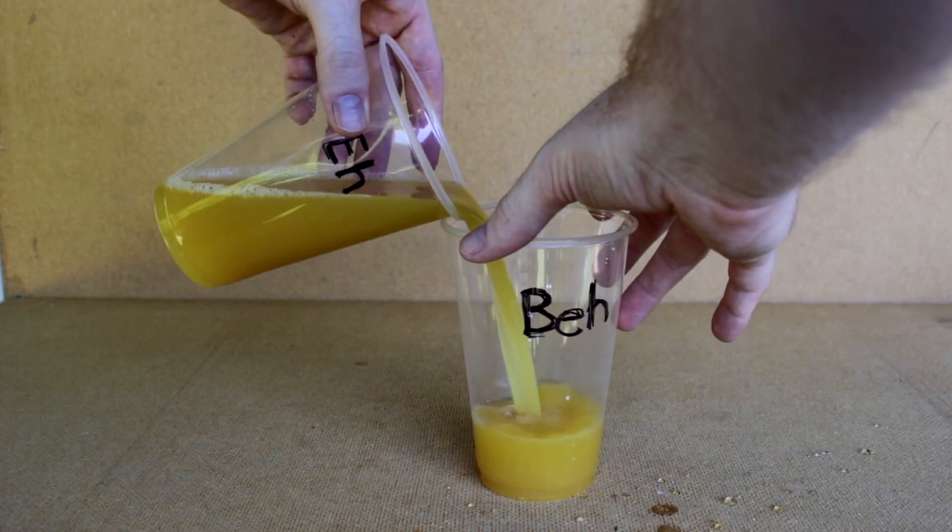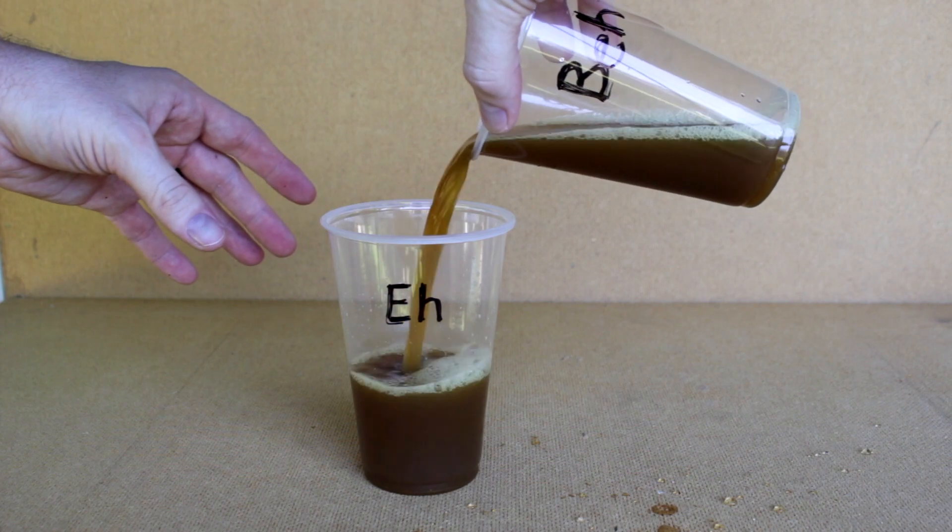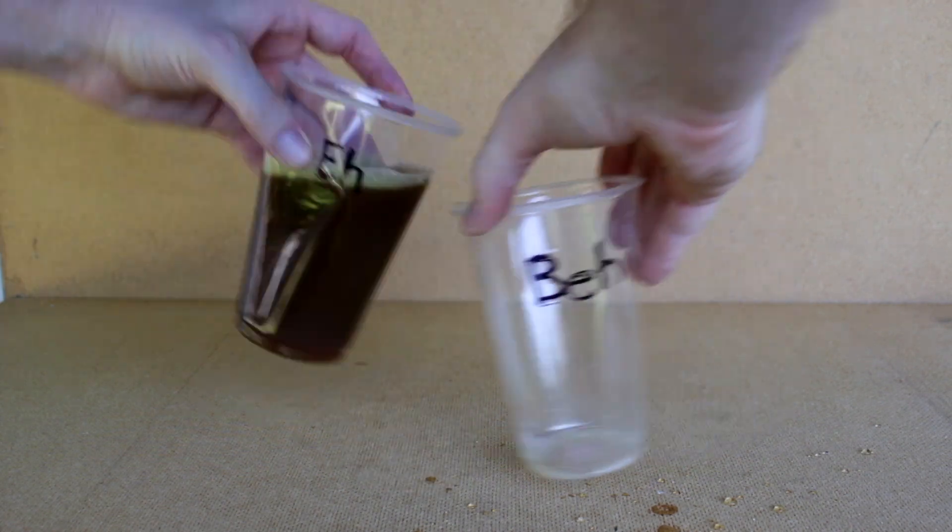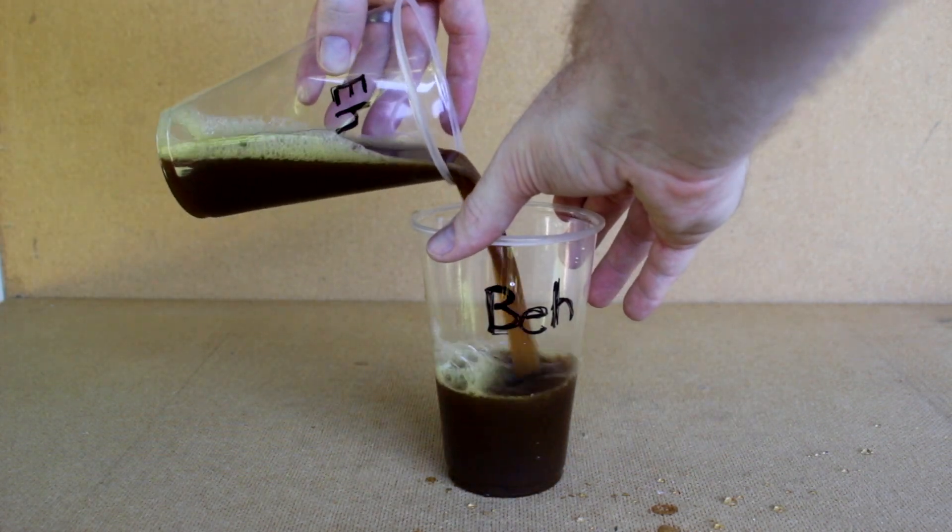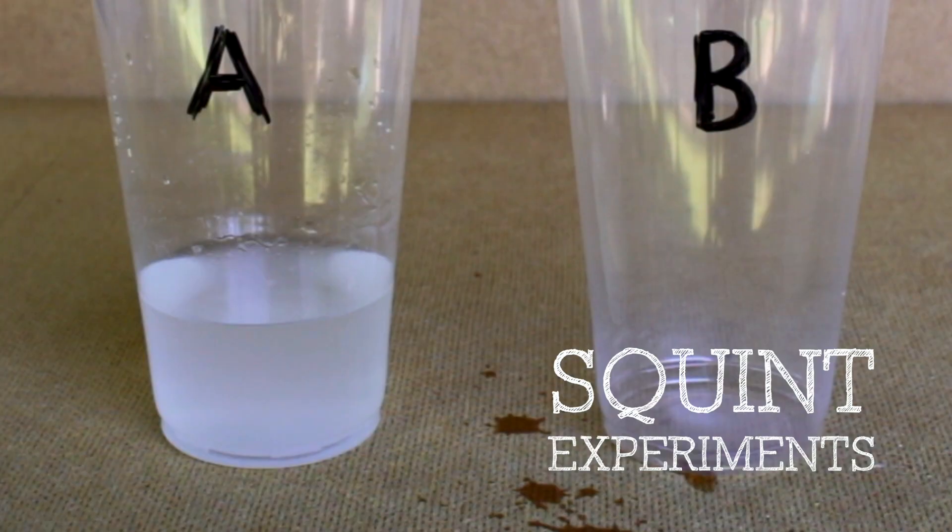This one happened a lot quicker, but the color change itself was slower and less impressive. No offense to OJ. Try it out yourself, and see what other juices high in vitamin C do the same reaction. And tune in next time for more Invisible Science.